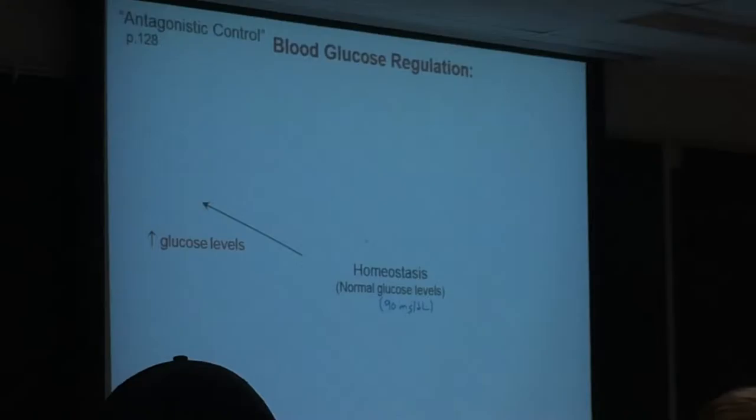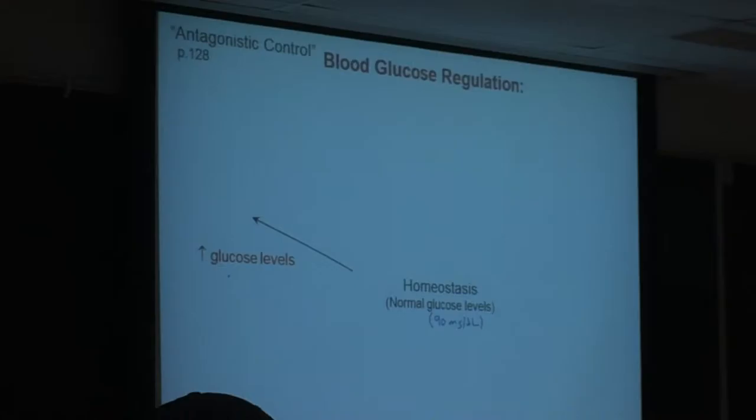So, normal glucose levels, again, if you want to put a value down, maybe somewhere around 90 milligrams per deciliter, and that would be human.